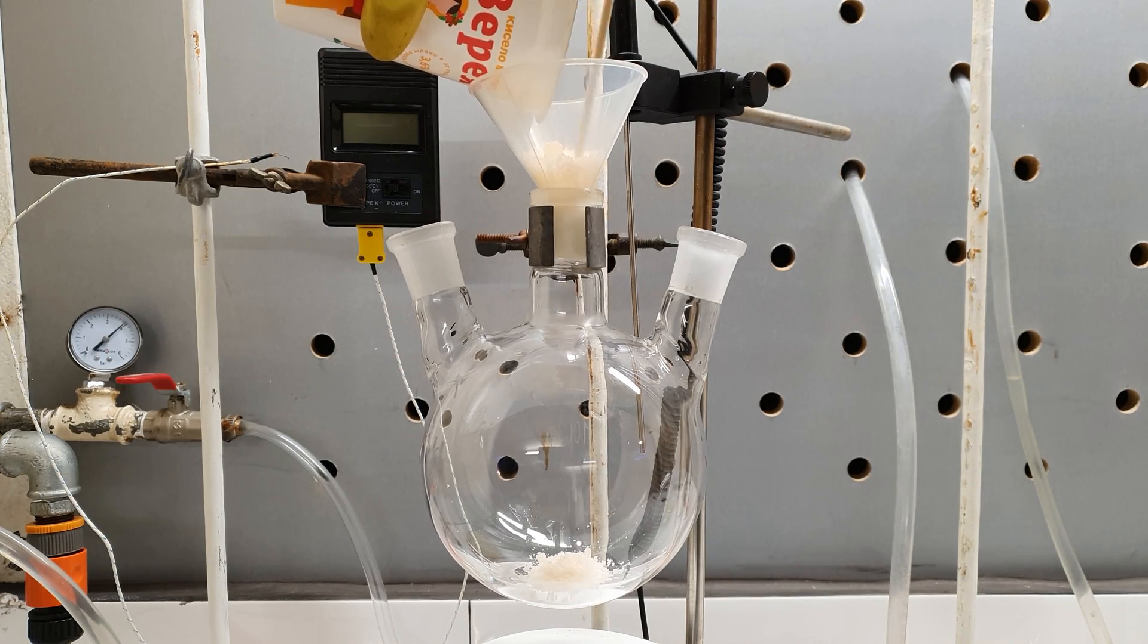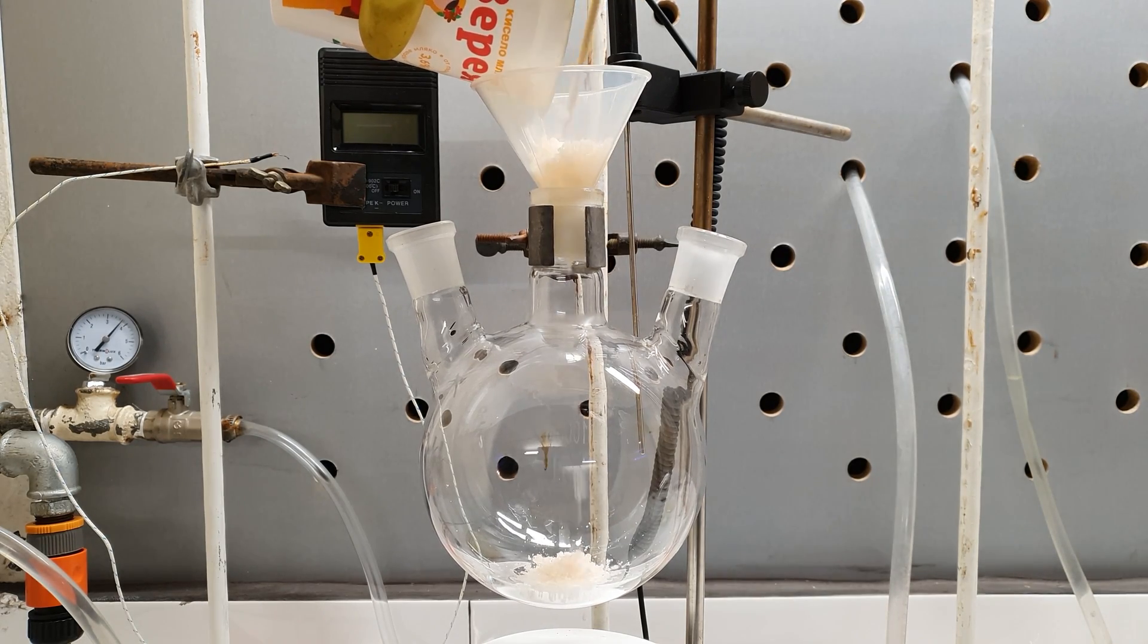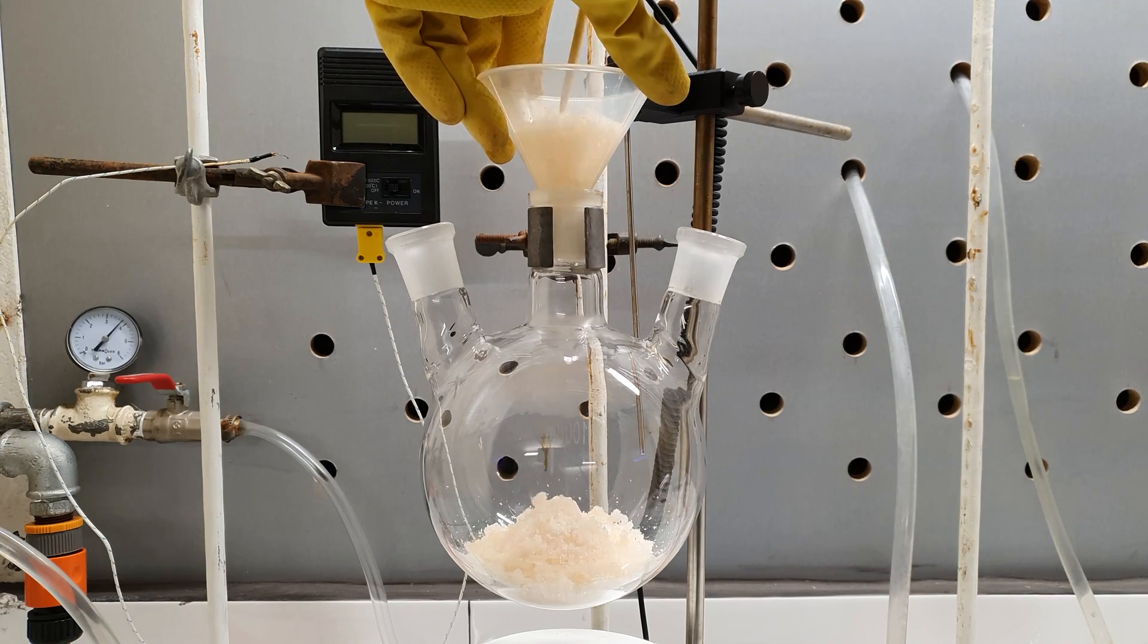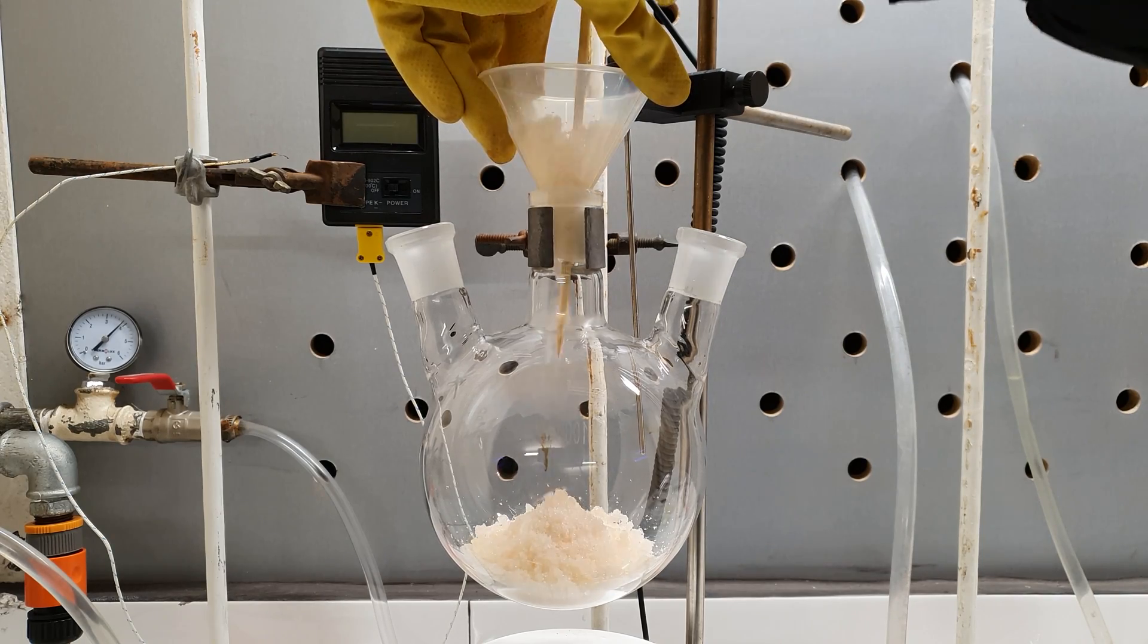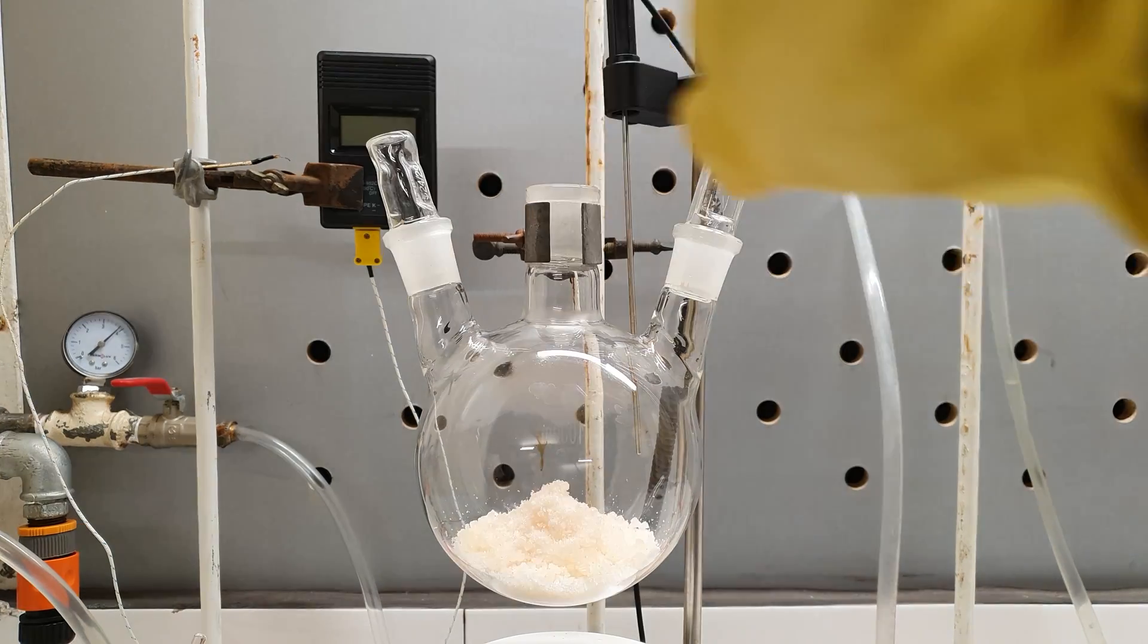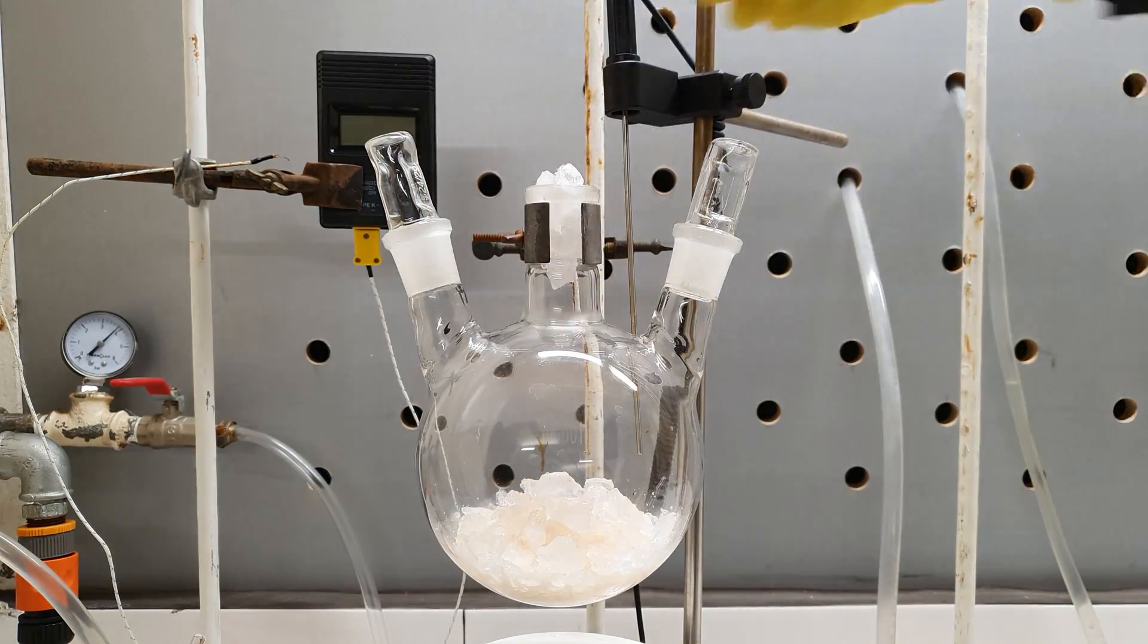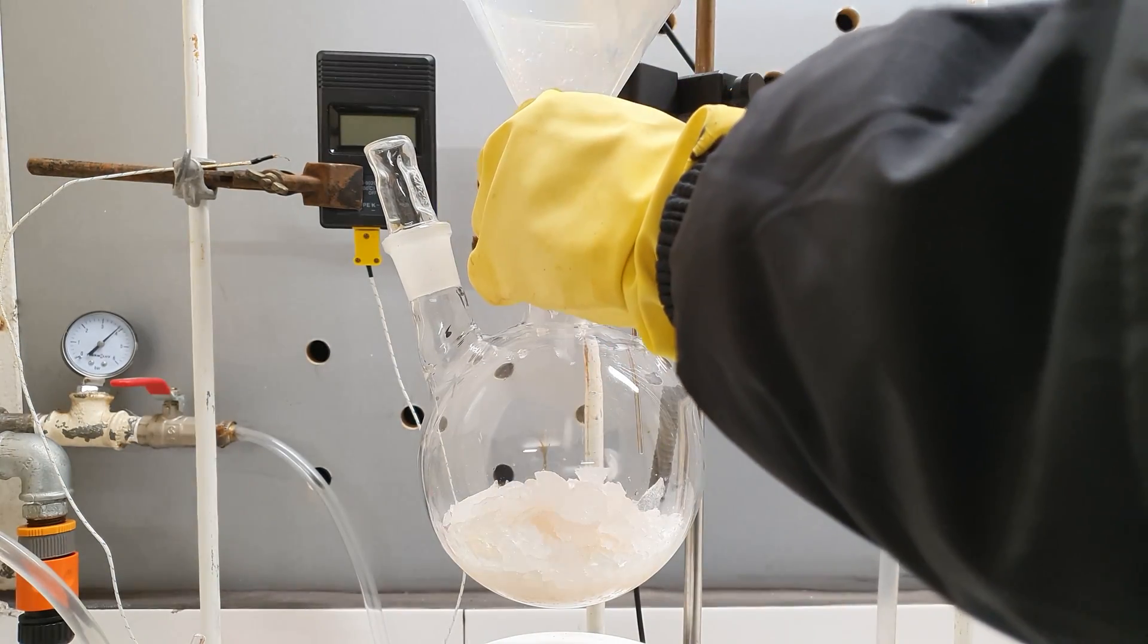I placed 100 grams of chloroacetic acid in a 1 liter, 3-necked, round bottom flask. To this, I added about 150 grams of crushed ice.